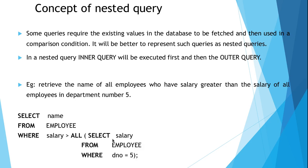The inner query is: SELECT salary FROM employee WHERE department_number = 5, which retrieves the salary of all employees in department 5. Then we have to retrieve the name of employees who have a salary greater than all salaries in department 5. That should be written as the outer query: SELECT name FROM employee WHERE salary greater than the result of the nested query.